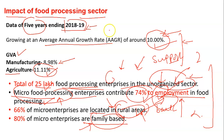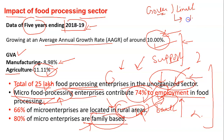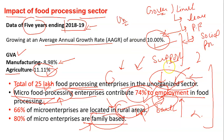The unorganized sector is generally not governed by the rules and regulations laid down by the government regarding conditions of employment. For example, if any person is working in a government or limited company, they are able to get leaves on time, PF, and social protection schemes — which is not the case in the unorganized sector. By supporting this sector through government policy or schemes, you can help generate employment and achieve regional balance.